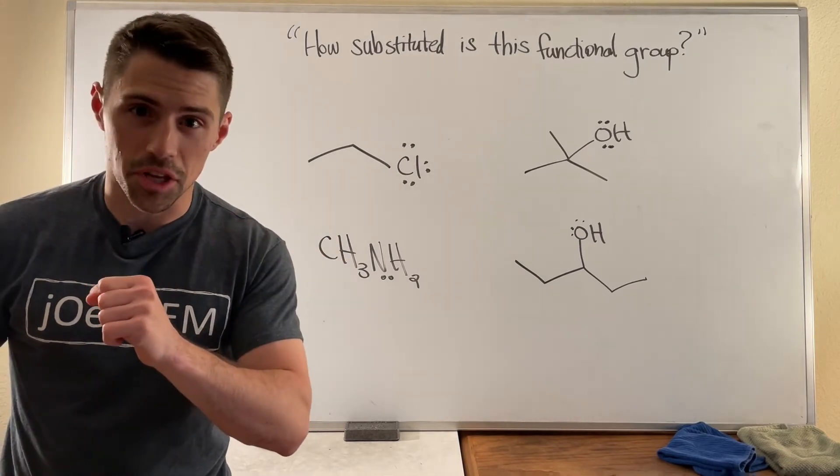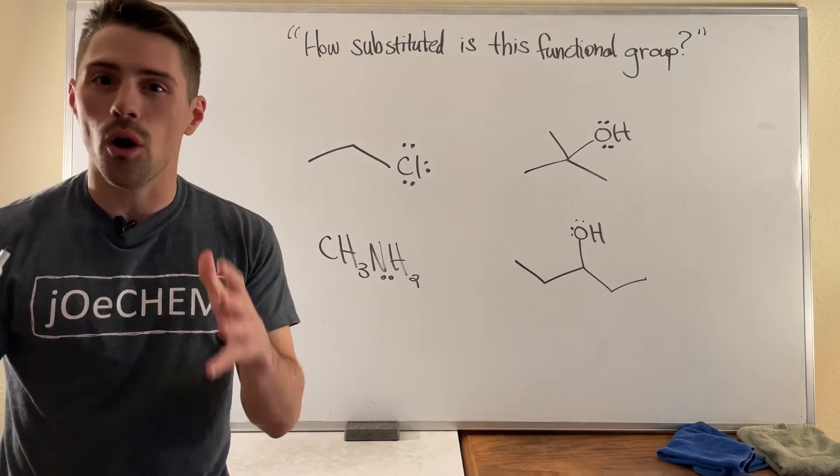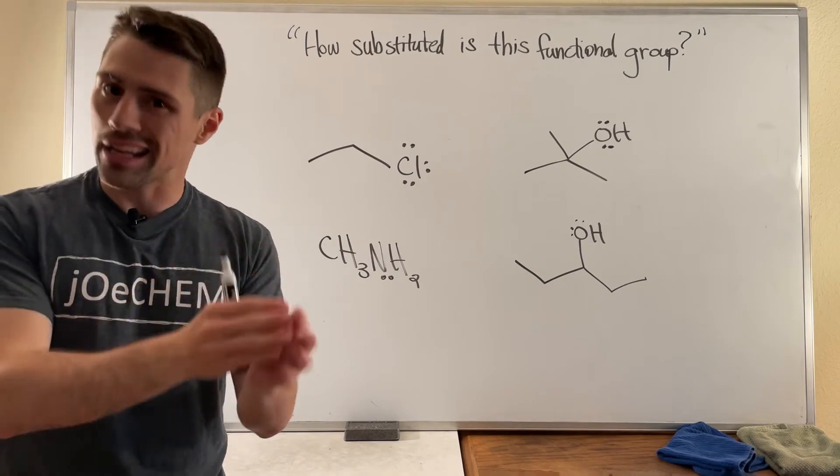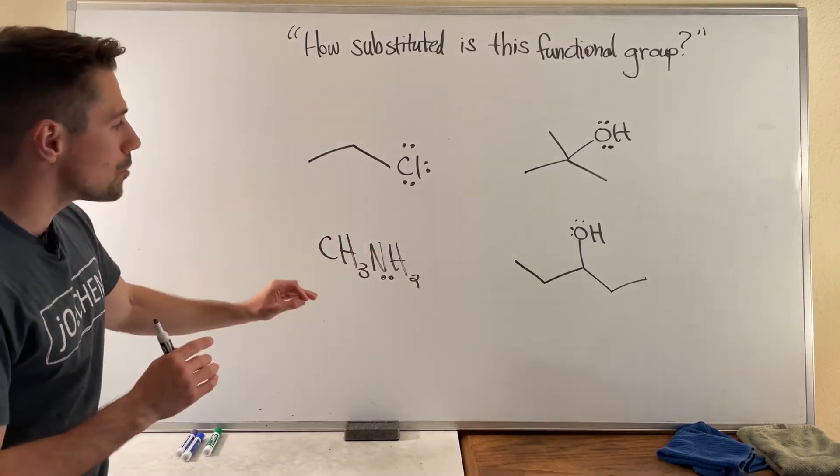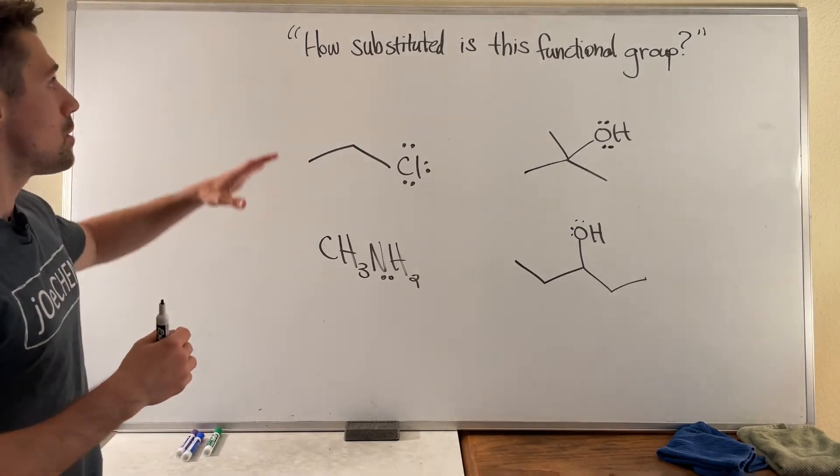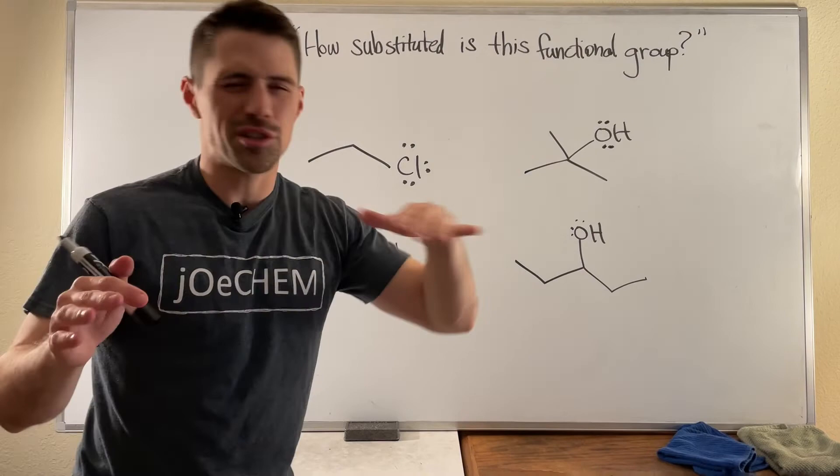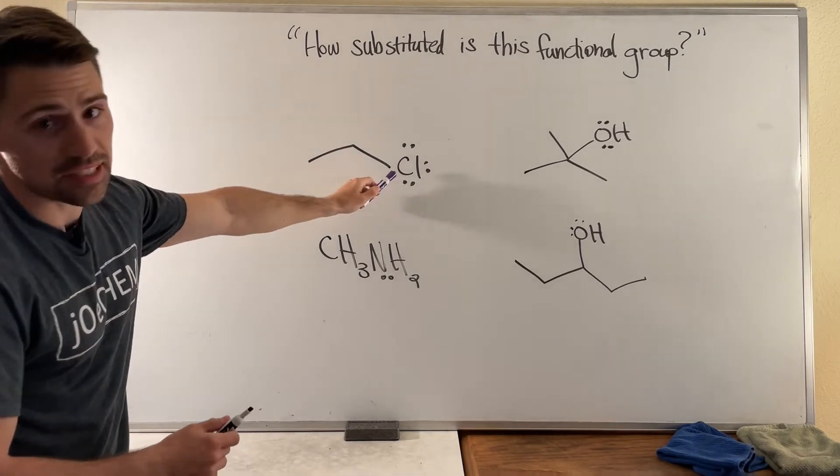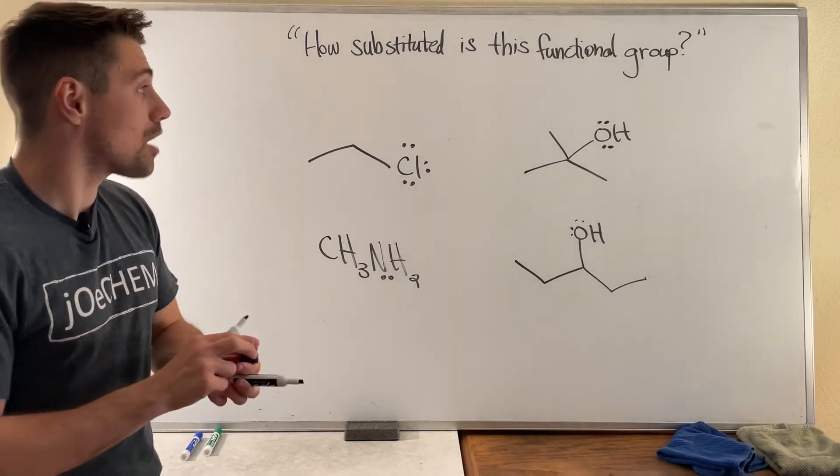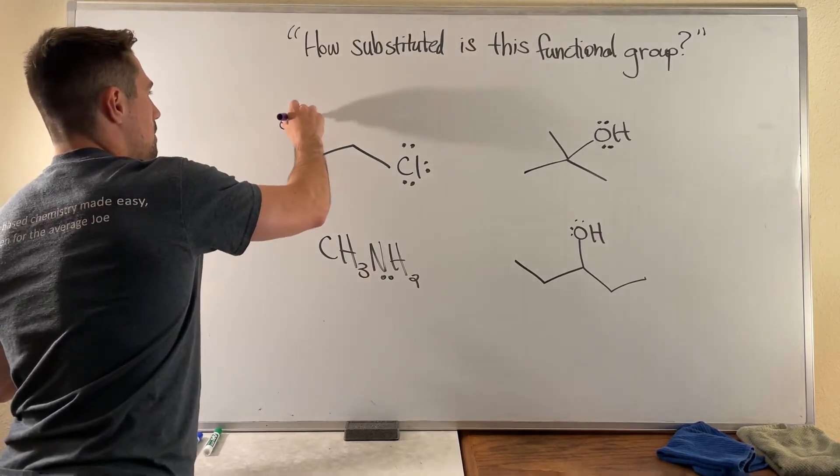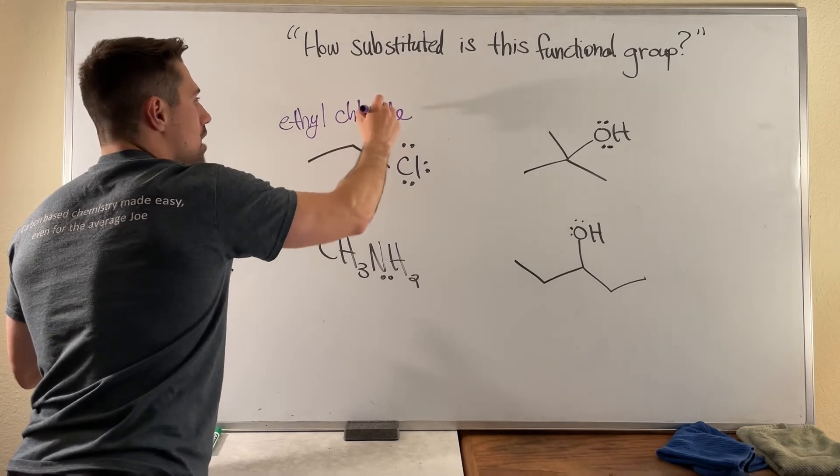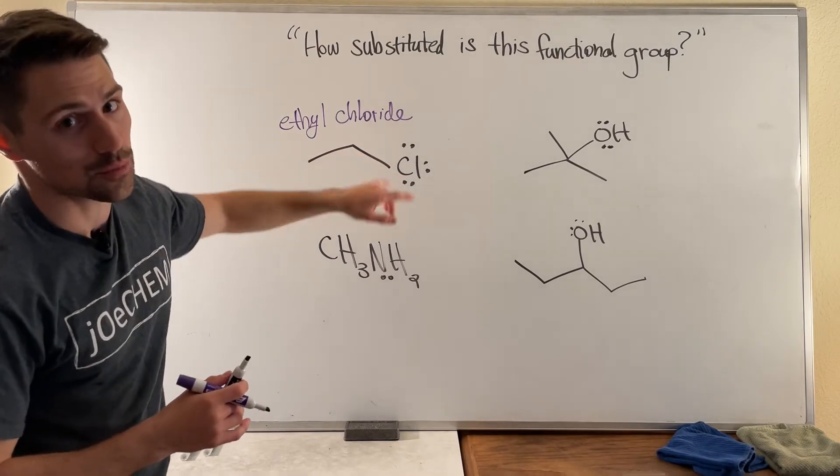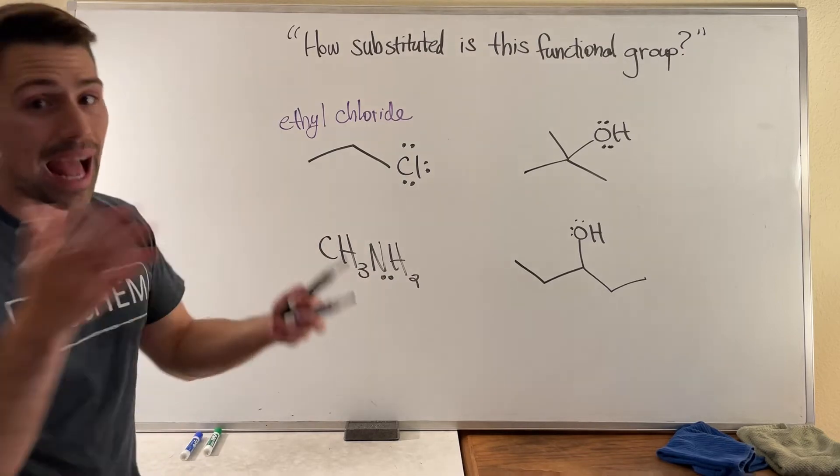Okay gang, as we close this video out, the last stop I want to make here is just taking all of this knowledge we've learned about being able to describe how substituted something is and apply it not to just regular old carbons but to carbons that have functional groups attached to them. So now the question is slightly different, it's how substituted is this functional group, which you'll see what I mean. If we take a look at this structure right here, you can see we have two carbons and a Cl. You'll know this soon in this section once you do common naming, but this is ethyl chloride.